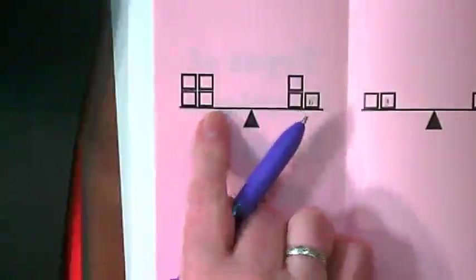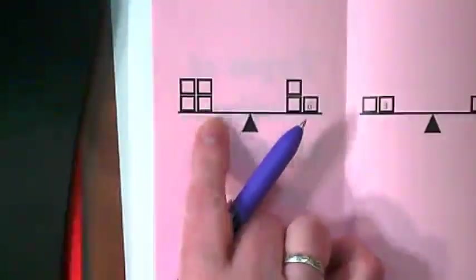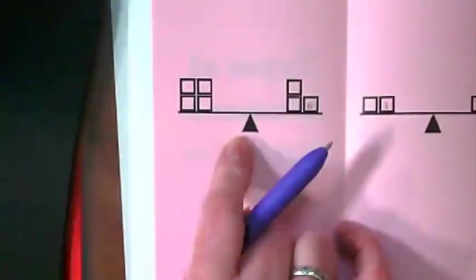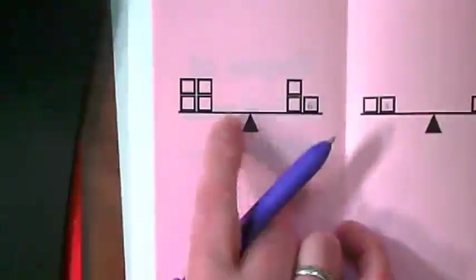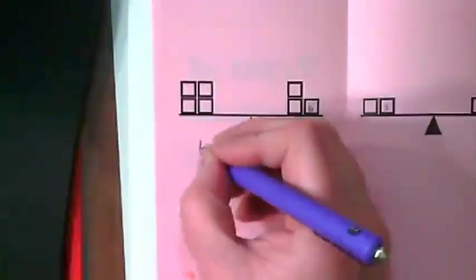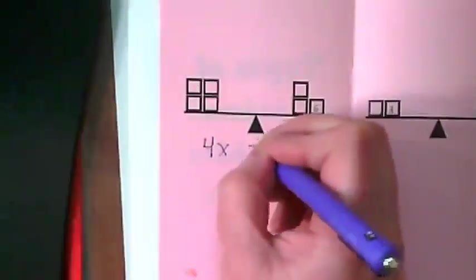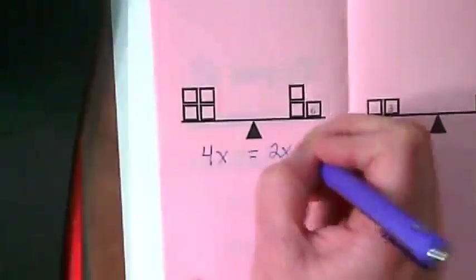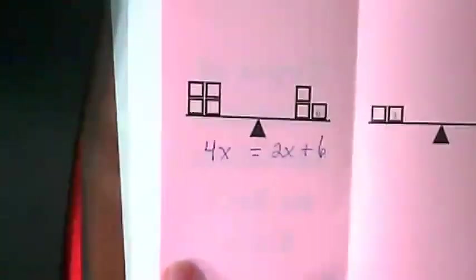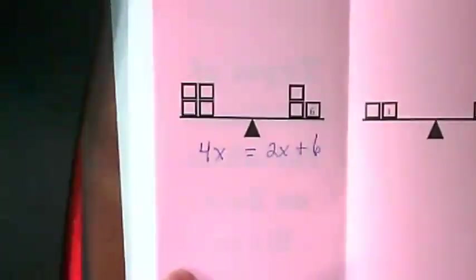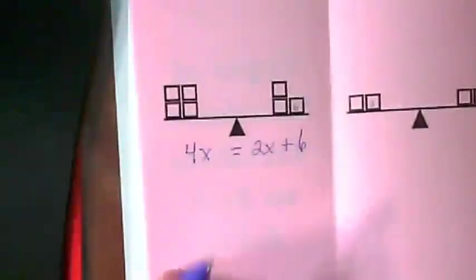What do I mean by that? I would rewrite this equation. By the way, can you see this is a little scale that it's sitting on? I would rewrite this equation as 4X equals 2X plus 6. Talk at your table and see if you can determine where I got that equation from.